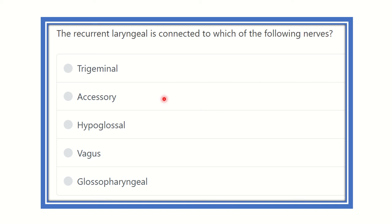Hi everyone, welcome to another question and answer session. The recurrent laryngeal nerve is connected to which of the following nerves? The options are: trigeminal nerve, accessory nerve, hypoglossal nerve, vagus nerve, and glossopharyngeal nerve.